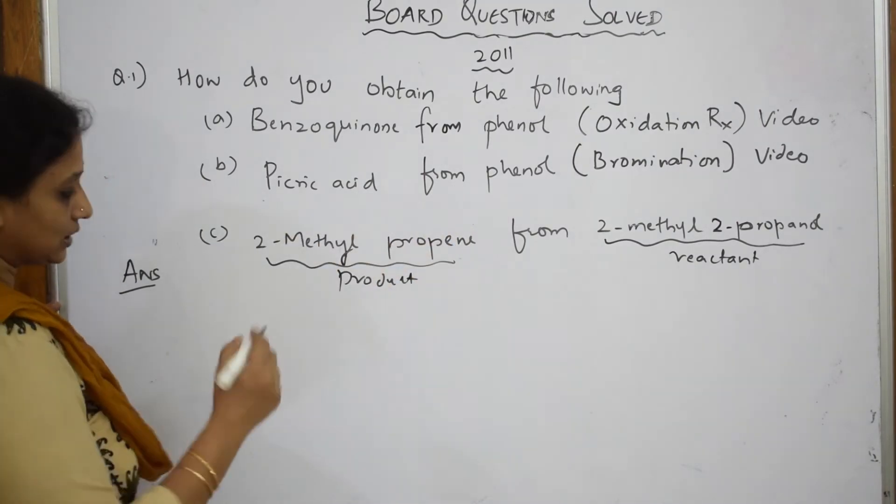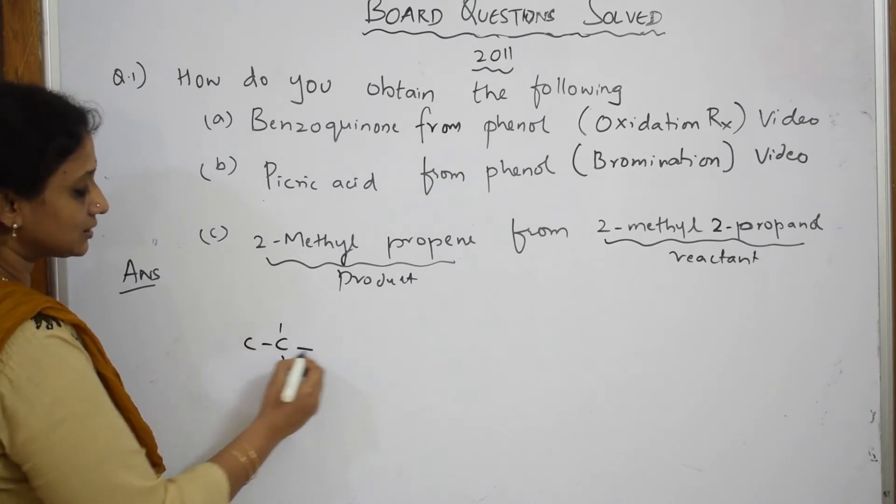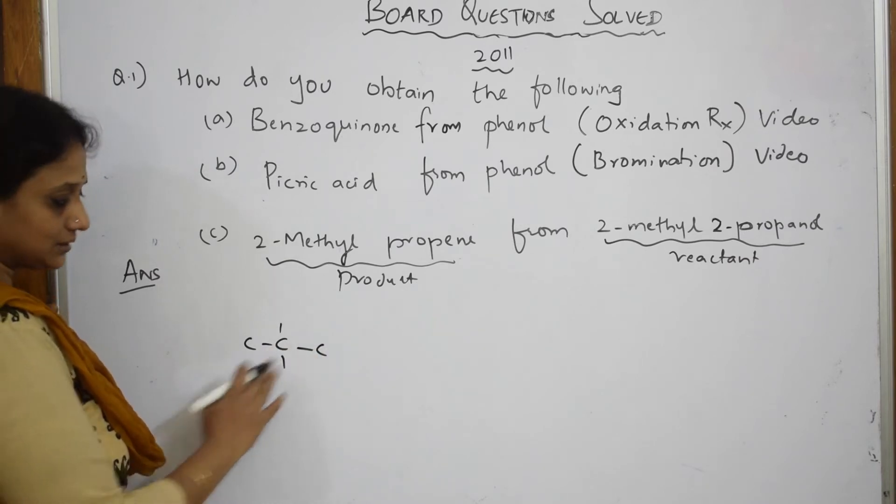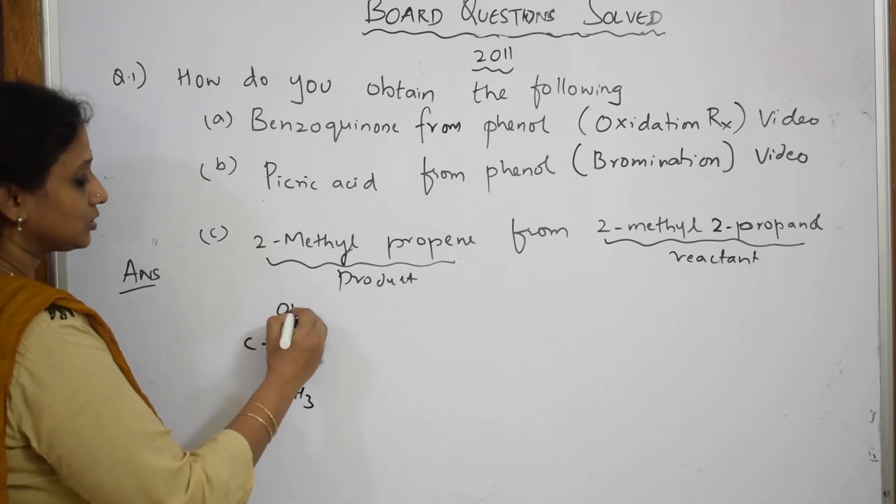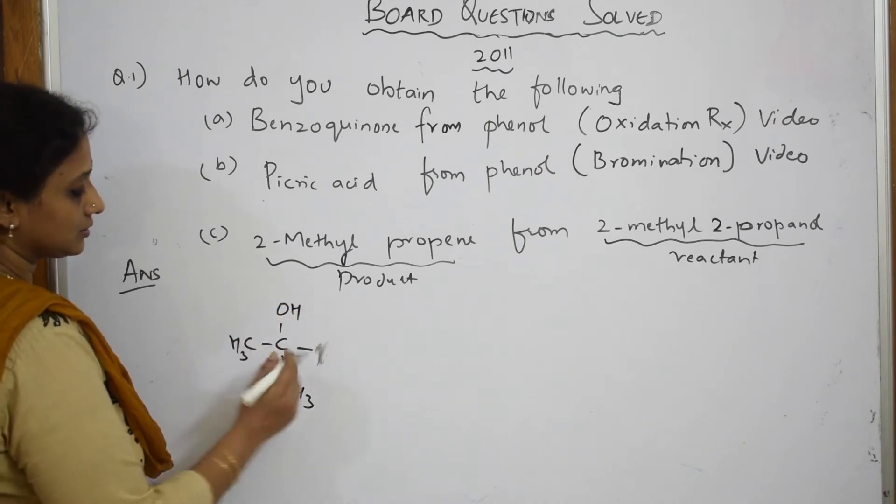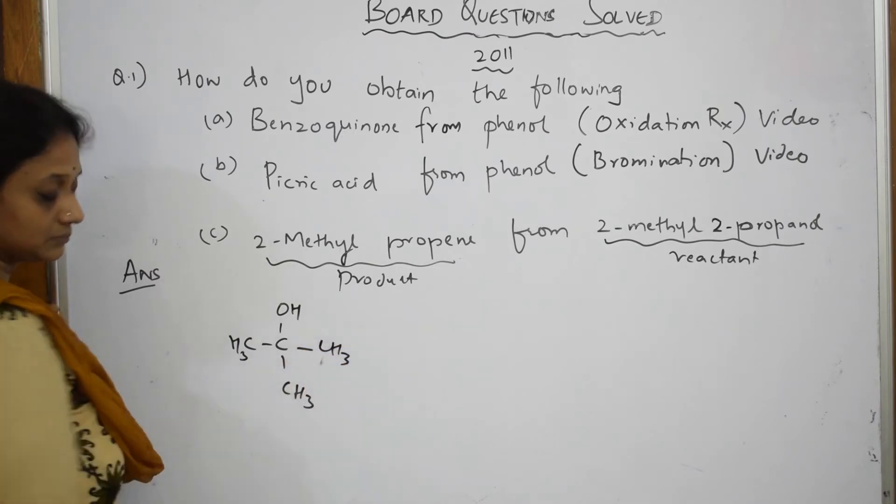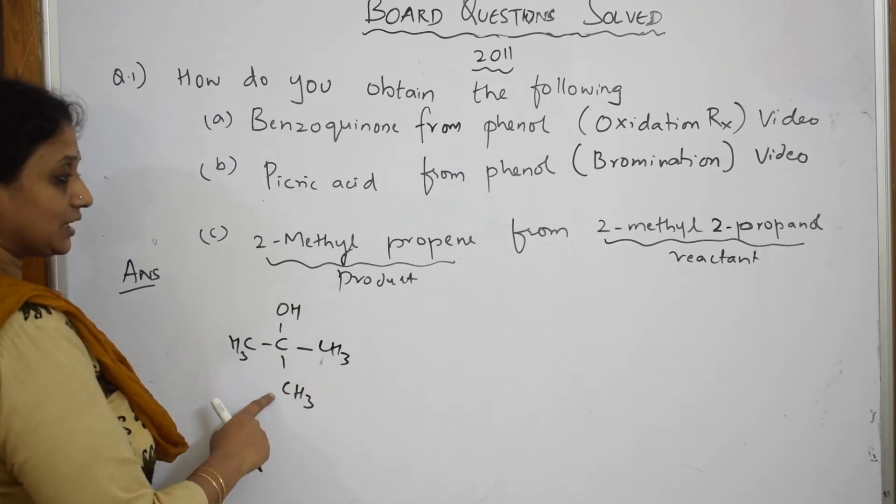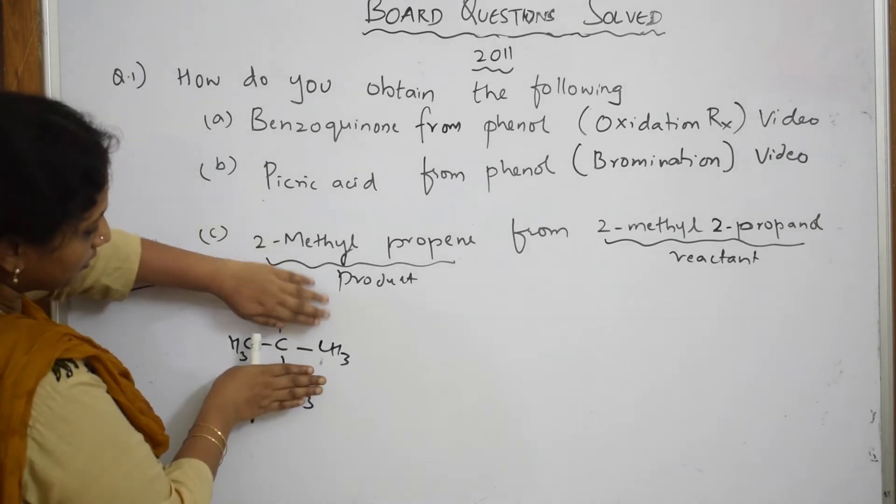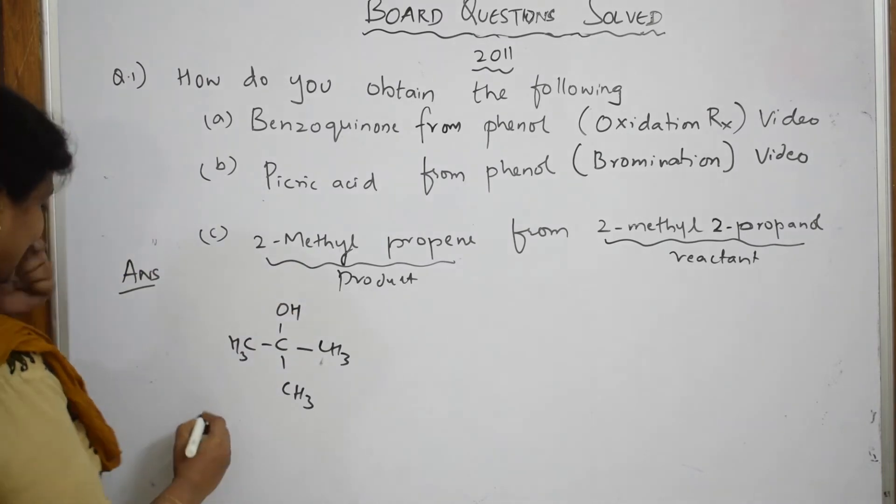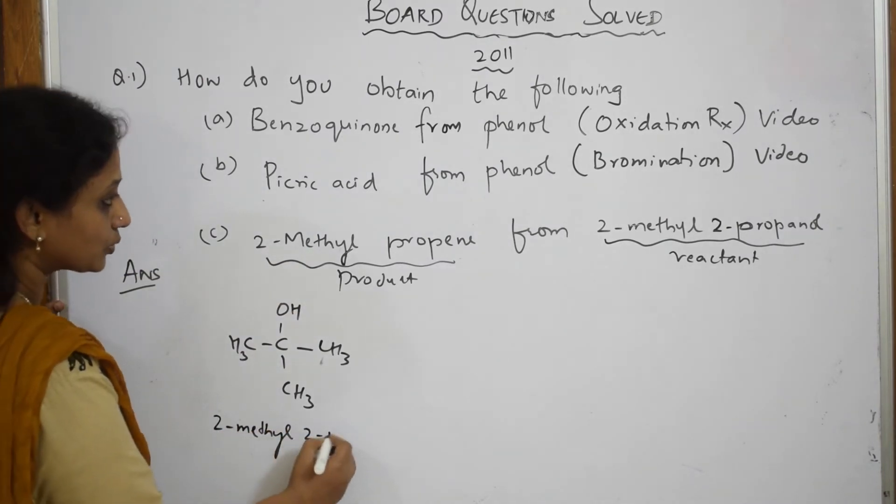Now let us write the structure once this is given. So 2-methyl-2-propanol. They said this is your prop molecule, so methyl group and this. Write this name: 2-methyl-2-propanol. This is your prop molecule with methyl group. Done.